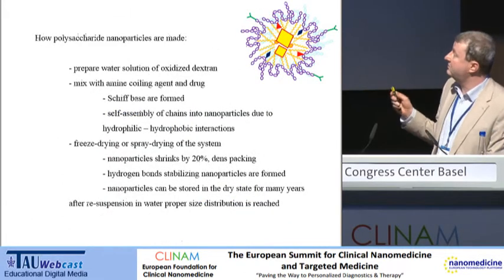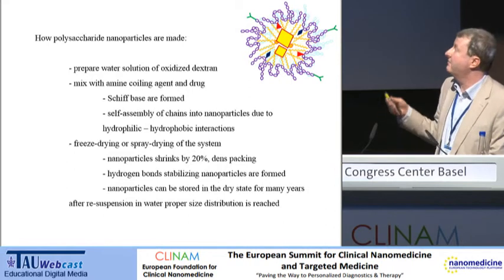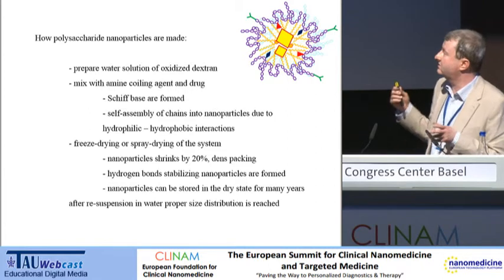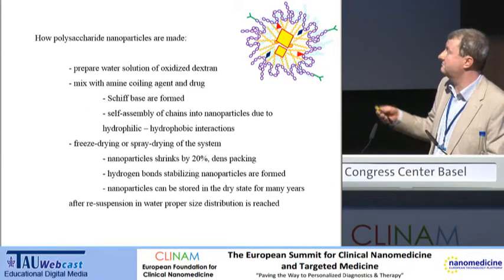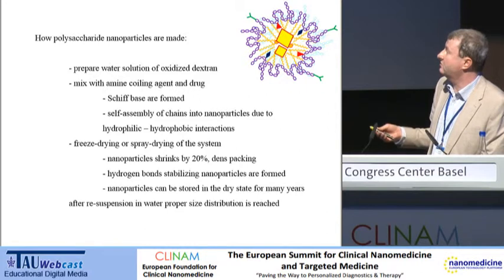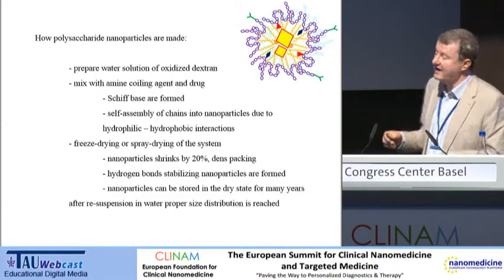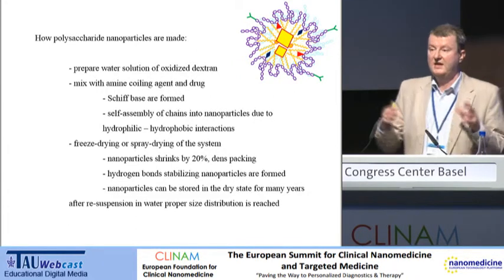How we really do it: first we prepare an oxidized polysaccharide, then we mix it with an amine under aqueous conditions, room temperature — no dangerous chemicals, no drastic pH. So we have a first Schiff base formation. And then, due to hydrophobic-hydrophilic interaction, we have self-assembly of nanoparticles. This is the first product — first nanoparticles, which are not finished yet.